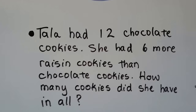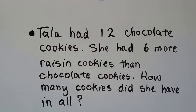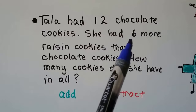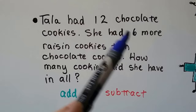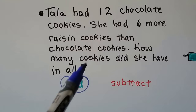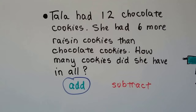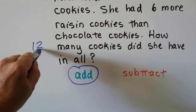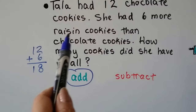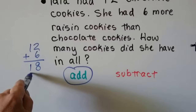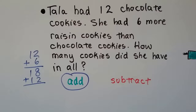Tala had 12 chocolate cookies. She had 6 more raisin cookies than chocolate cookies. How many cookies did she have in all? Actually, there are two parts to this. The first part is we have to find out what 6 more than 12 is, so we add 6 plus 12 — that's 18. So she had 18 raisin cookies because she had 6 more than the chocolate ones. Then we have to add the 18 raisin cookies to the 12 chocolate cookies to get the total amount in all. So it's adding and then adding again — two parts.